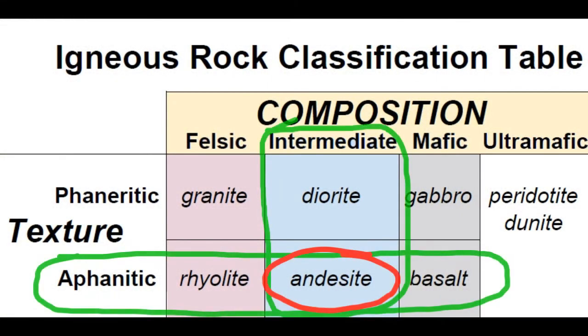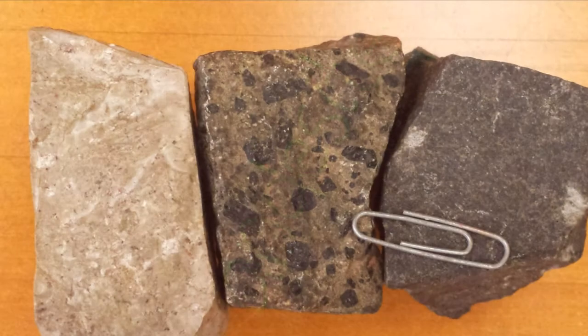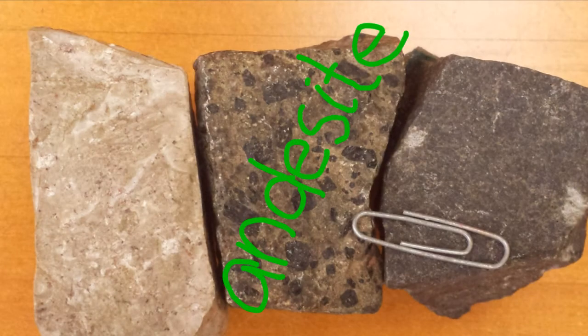In the igneous rock classification table, we find that an aphanitic rock that is intermediate in composition is named andesite. Andesite is an intermediate, aphanitic, igneous rock.